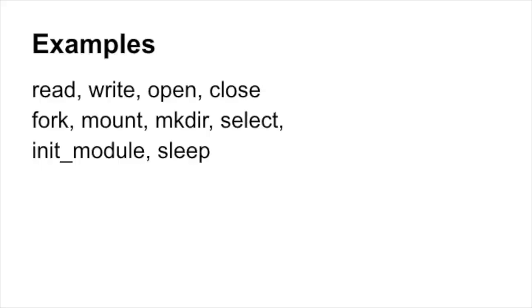Let me give you some examples to help motivate this concept of the application needing the operating system to do something on its behalf. Here are some examples: read, write, open, close. These are file system things — I want to open a file, I want to read from it, I want to write back to it. As an application, I can't access the hard drive or disk connected to the computer directly; I need to go through the operating system to do that for me.